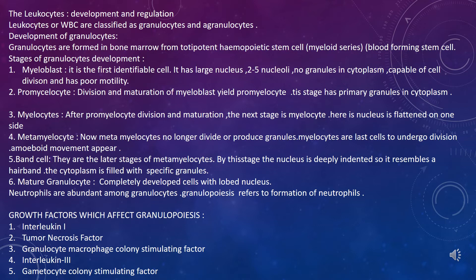Leucocyte development and regulation: WBCs are classified as granulocytes — which have granules — and agranulocytes. Granulocytes are formed in the bone marrow from totipotent hematopoietic stem cells. The first identifiable cell has a large nucleus with 2–5 nucleoli, no granules in the cytoplasm, and is capable of cell division with poor motility.